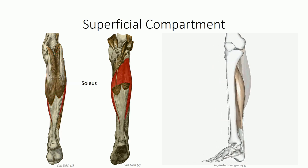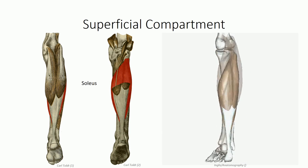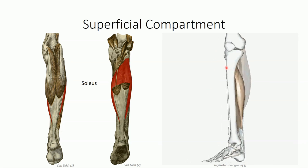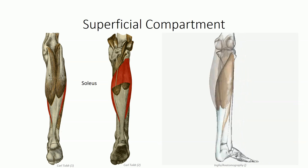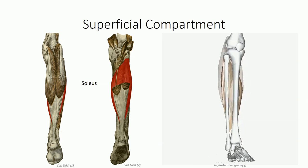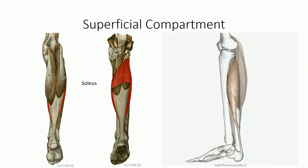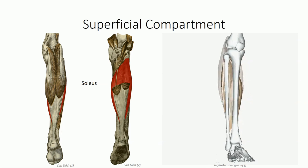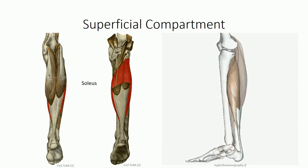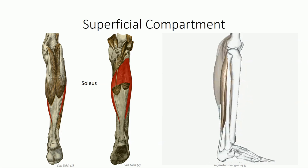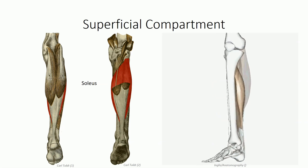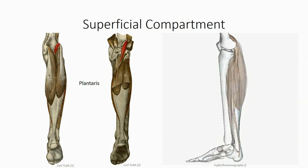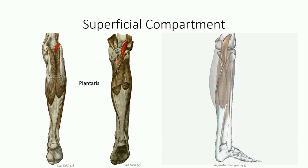Deep to gastrocnemius is soleus — the Latin term for sandal, which describes its shape. It has a broad origin off the posterior surface of the fibula that arches over towards the tibia, bridging over the interosseous space as the soleal arch, which allows for passage of the neurovascular bundle into the space between the superficial and deep compartments. Distally it fuses with gastrocnemius to form the Achilles tendon. While gastrocnemius is almost exclusively activated for forceful contractions, soleus is also active in normal standing to maintain balance and walking for propulsion — it is therefore the workhorse of the compartment.